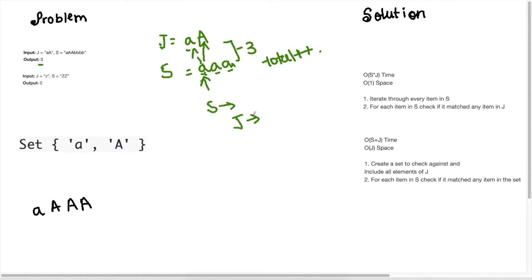So this solution is a little bit slower because for each item we need to visit all the items in J and then count our total. So the time complexity for this solution would be S times J, so the length of S times J, and the space complexity is O(1) because we're not using any auxiliary space. Now let's discuss an approach of how to optimize the time here.